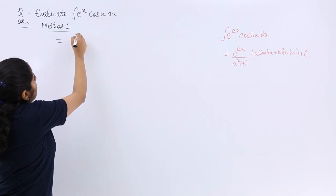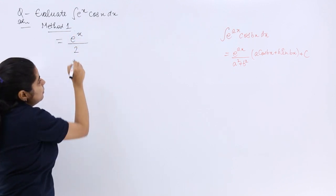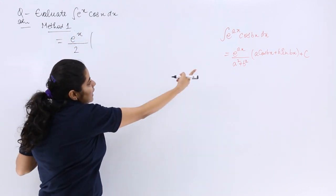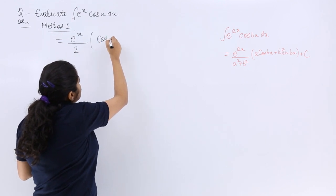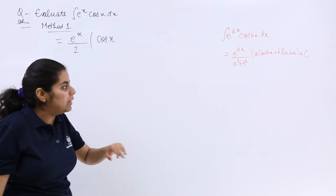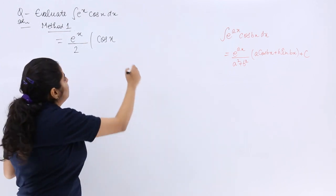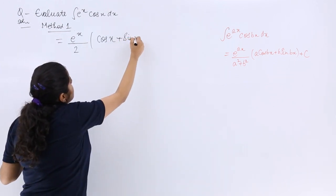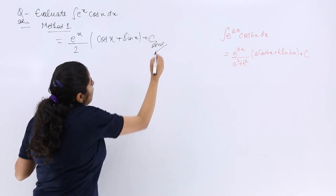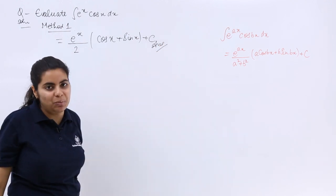So simply using the formula, e raised to the power x, 1 plus 1 makes it 2. In the bracket you have a cos bx means 1 cos 1x means cos x plus b sin bx means again sin x plus c. That is the answer with the help of the formula wherein you have to mention the formula.